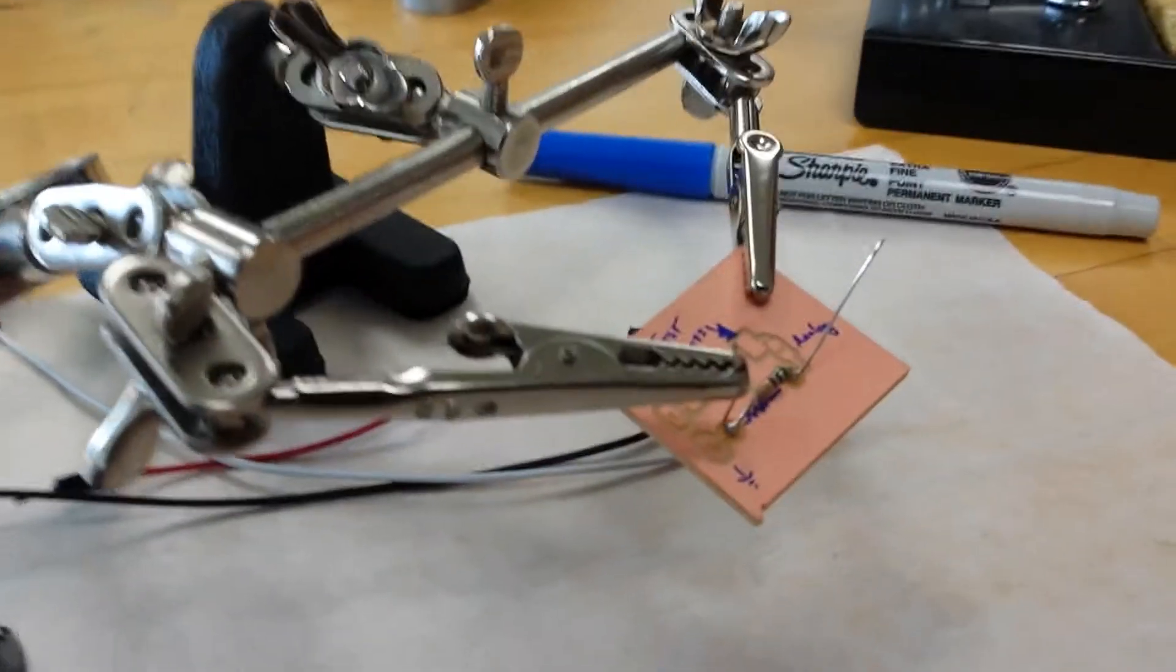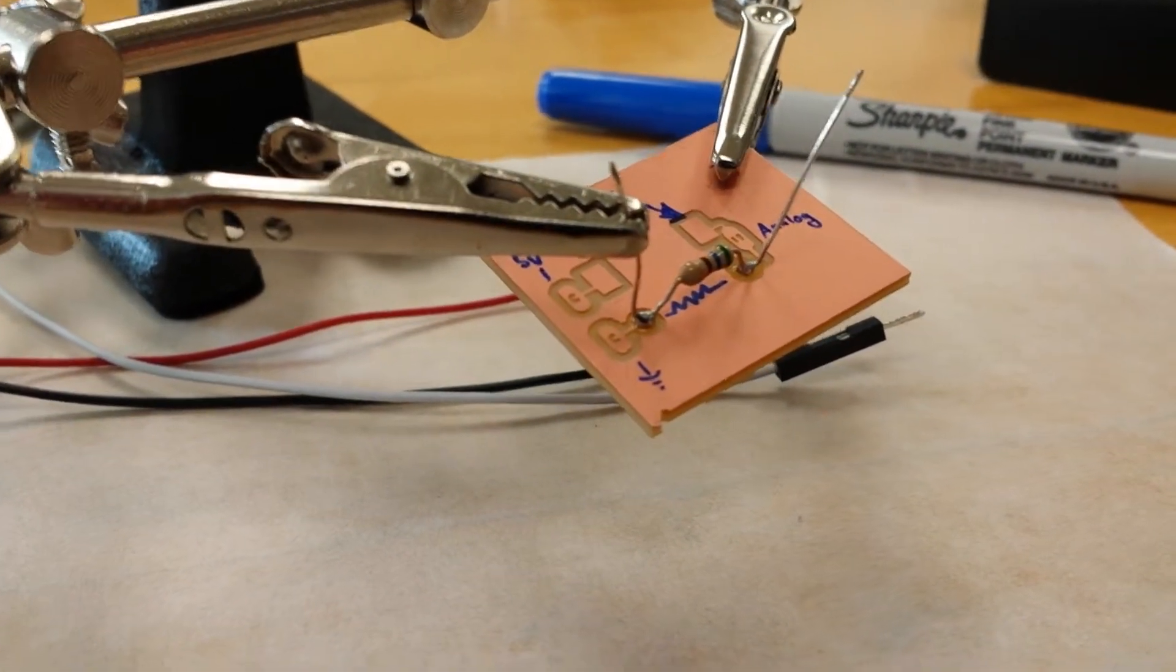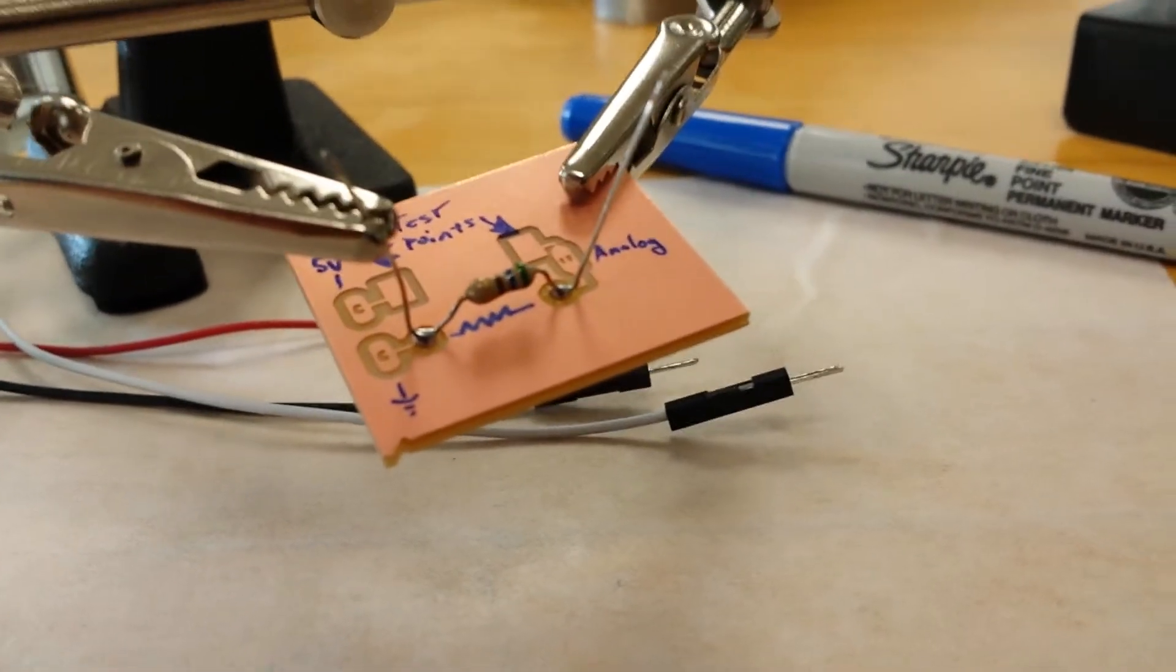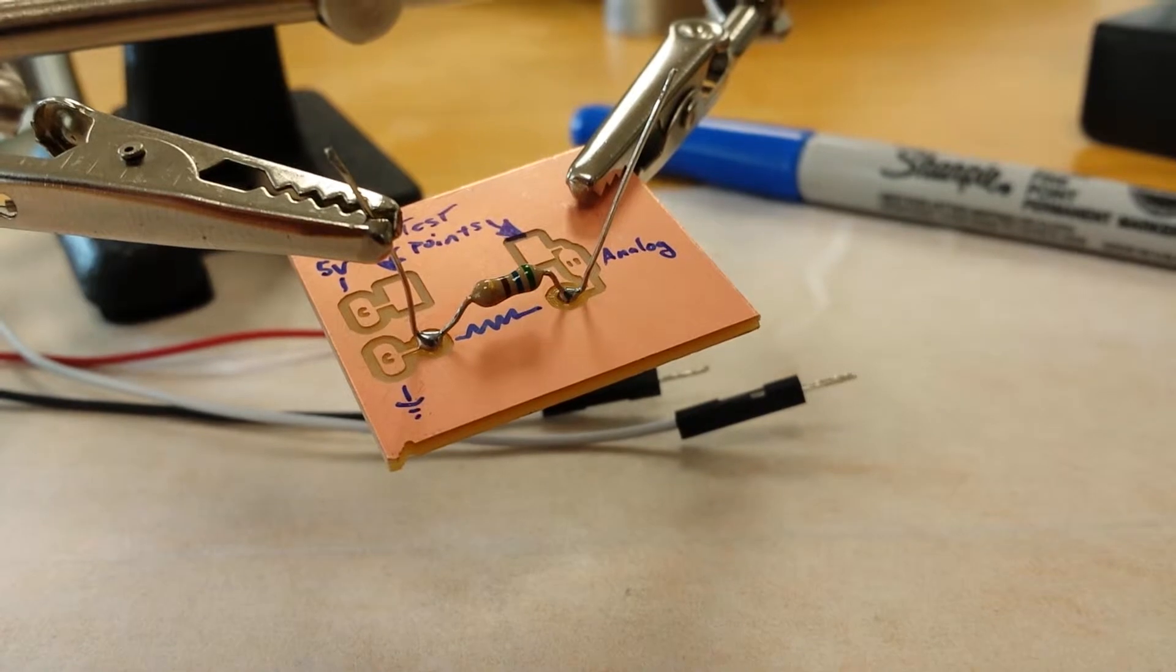And you want to have a nice smooth connection over the pins and the pad. So that is soldering the resistor in place.